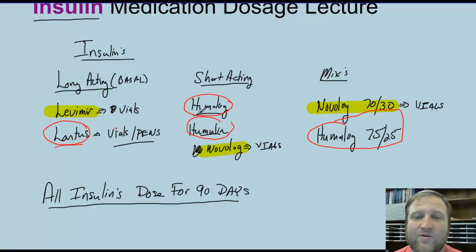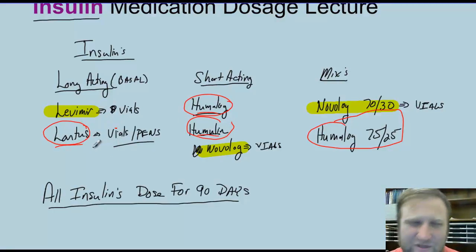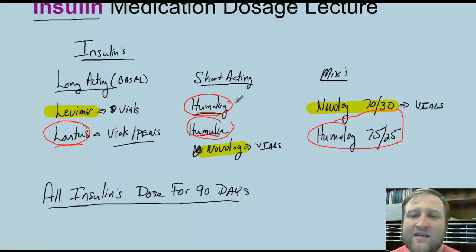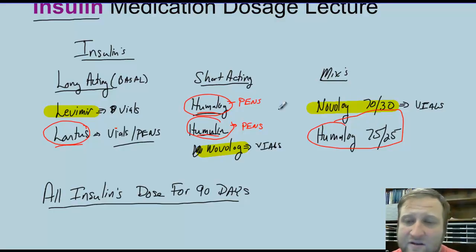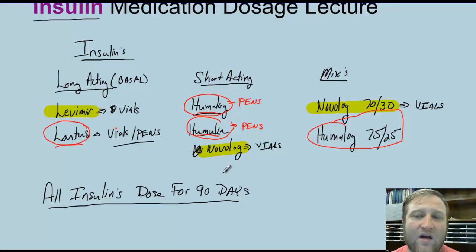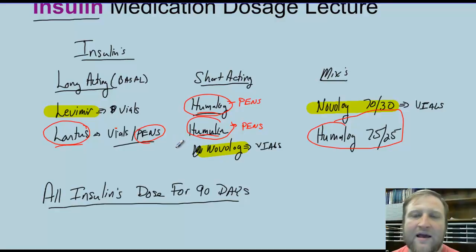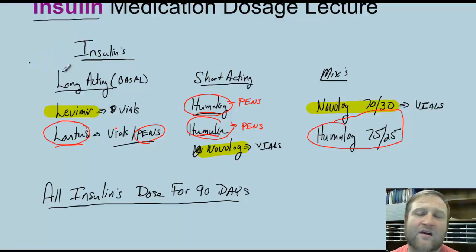That's why I usually recommend to our providers — is there any way we could write for Lantus over Levemir? Because we can still get Levemir as a pen. Can we write for Humalog or Novolog? Because we can still get these as pens. This helps our patients with ease and compliance by recommending insulins that can come in pens, because they're very, very expensive.